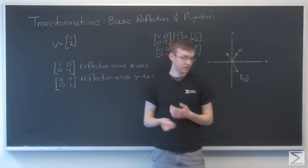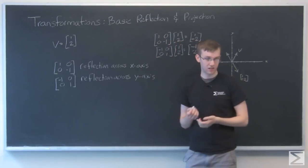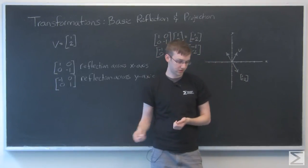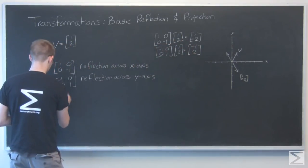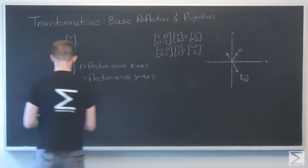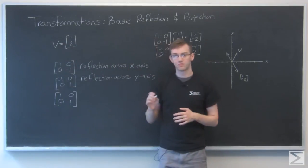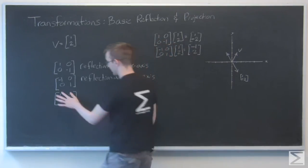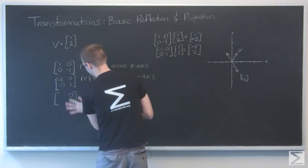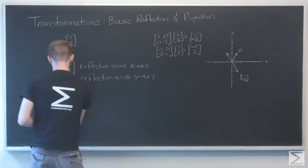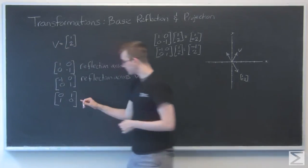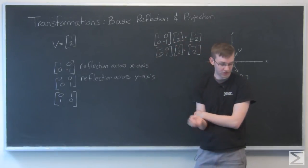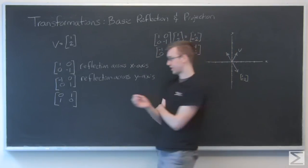So one other one that might be interesting to look at is reflection across the line y equals x. And this is going to look like the matrix... I meant to write 0, 1, 1, 0. That will be reflection across the line y equals x.